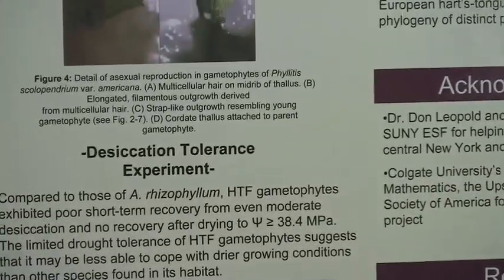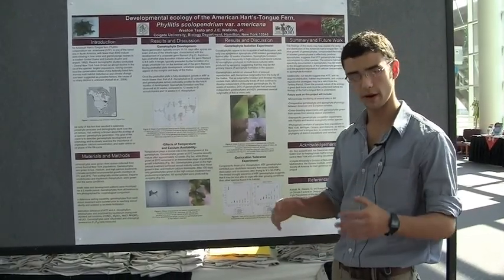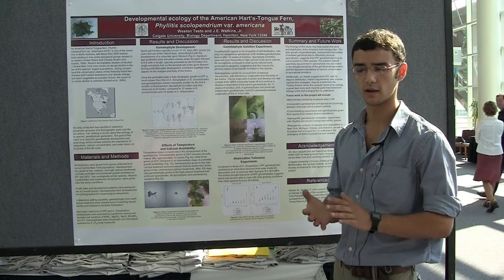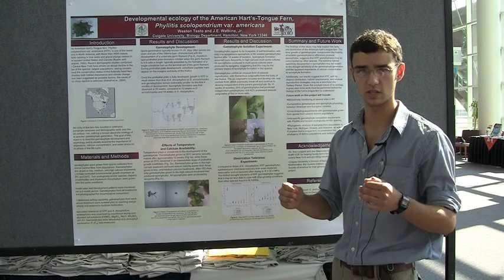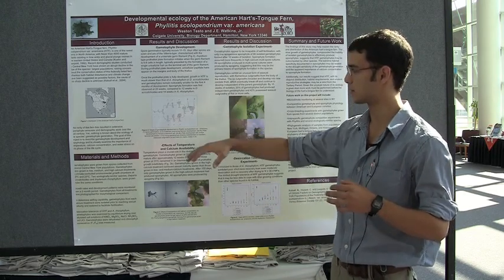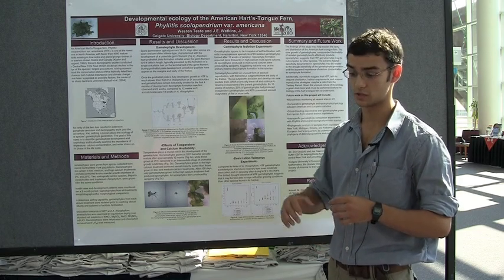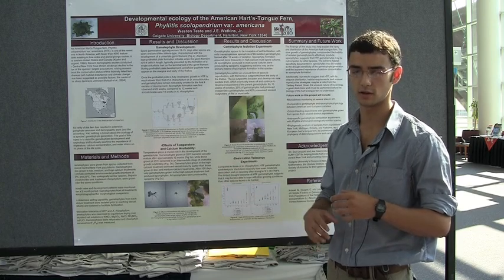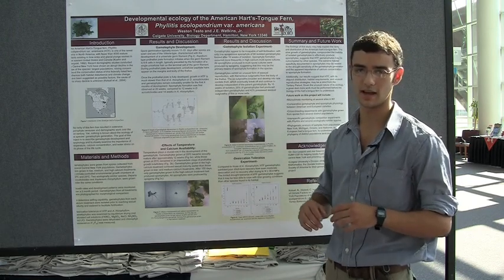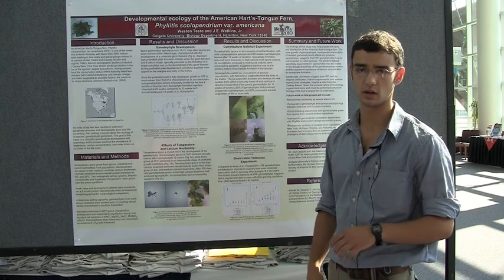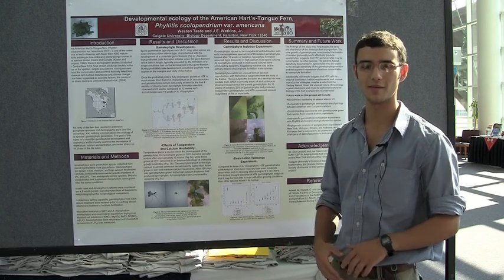I've got a lot more work to do with this. I'm an undergrad with two more years at Colgate University. I'm going to do some more comparative work with the sporophyte generation and interspecific gametophyte competition, to see if there's any hormonal competition between these species. I also want to do some phylogenetic molecular work to better understand the strange distribution of the American Heartstongue Fern — which also has a variety in Europe — to understand how this fern came to have this distribution and how distinct each population is genetically. That's pretty much all I've got for you today. Thank you very much for your time.